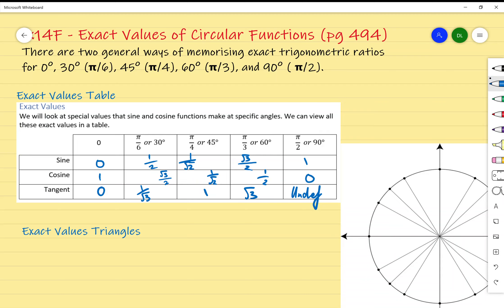Exercise 14f on exact values of circular functions. Over the last couple of lessons we looked at finding values for multiples of π/2. π/2 really helps us because we can easily find what's either going to be 1, 0, or negative 1, particularly when it comes to sine and cosine.